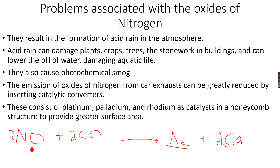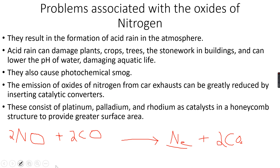In a catalytic converter, nitrogen monoxide is reduced to nitrogen and carbon monoxide is oxidized to carbon dioxide. You need to remember this equation and know that this is how we prevent the emission of harmful gases from car exhausts.